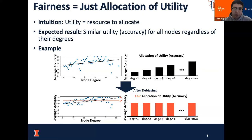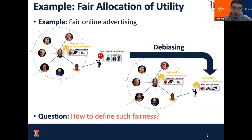What we want is to find a fair allocation of utility. Originally, we may have some unfair allocation of utilities, shown by black bars, and after debiasing we want the allocations to be fair, shown by the orange bars. To illustrate this with the toy example: after debiasing, we want to make sure the system can provide high-quality recommendations to the grassroots players, while also keeping very good performance on the celebrities in the middle of the graph.